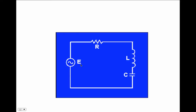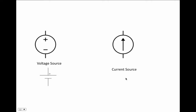Sometimes the letter E is used instead of V for voltage because it stands for electromotive force — don't worry about that. The standard notation is: E or V for voltage, R for resistance or the Greek letter omega, L for inductance, and C for capacitance. We won't worry about inductance and capacitance right now. A voltage source is written as a circle with a minus and a plus, or as a battery symbol with a long positive line and a short negative line.